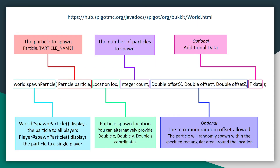That's essentially all of the particles that there are to spawn through the spawn particle method. There are probably additional things you can do with it, and also alternate ways to spawn particles like directly through packets, but everything in this tutorial series will be done directly through this spawn particle method call using the same variations shown in this video.